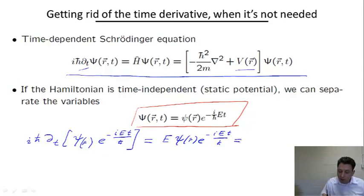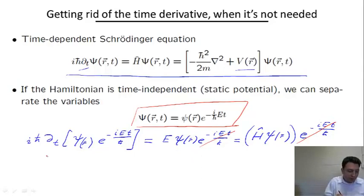On the other hand, the right-hand side, since there is nothing time-dependent, simply reads the Hamiltonian acting on the position-dependent part, and the exponential is also here. But it's irrelevant in the sense that the Hamiltonian doesn't see it. The Hamiltonian only involves the derivative with respect to spatial coordinates or the potential, which is just a multiplication operator. We see that both sides of this equation contain this exponential, so we can cancel it.